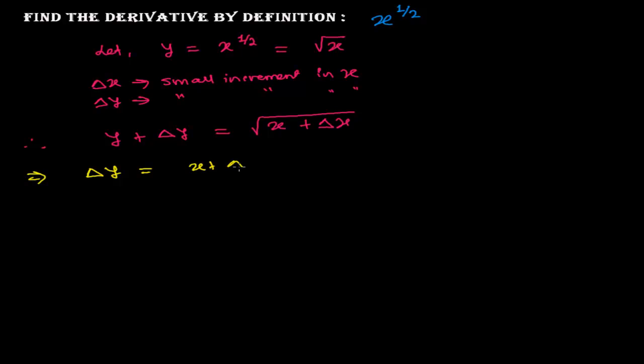So delta y equals root of x plus delta x minus y. In place of y, I can substitute root x, so it becomes root of x plus delta x minus root x.